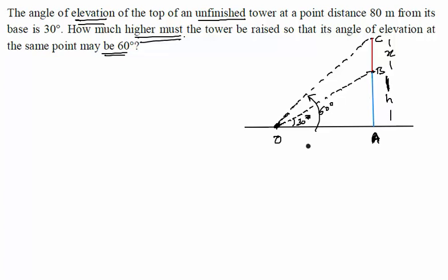Now, we should start writing few equations. So let us consider first the triangle OAB. In triangle OAB, if I write tan 30 degrees, tan of 30 degrees, which means I am considering this particular angle. So tan of this angle will be perpendicular upon base. Perpendicular upon base.